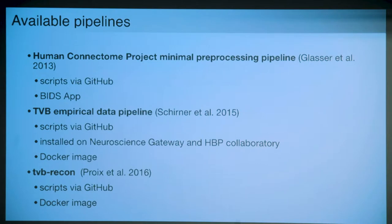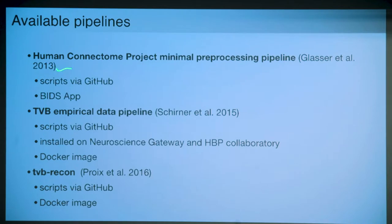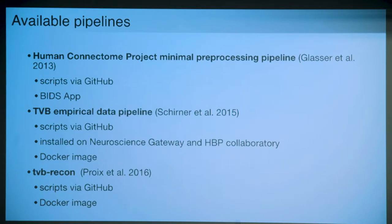There's a whole bunch of software out there with different pipelines. People try to automate everything, and depending on what kind of data and data quality you have, you can use different tools and methods to correct for artifacts. I can't cover everything here - I'm just showing things we use and recommend. From the different pipelines, I want to mention three. One is the minimal preprocessing pipeline of the Human Connectome Project, which we consider our gold standard.